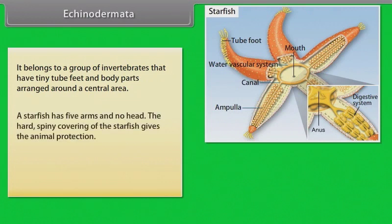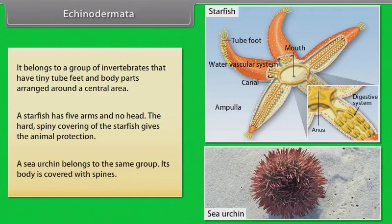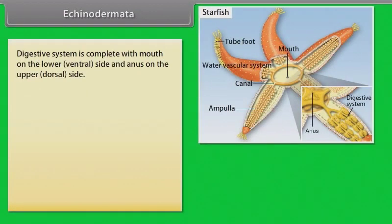A starfish has five arms and no head. Its hard, spiny covering provides protection. A sea urchin belongs to the same group and its body is covered with spines. The digestive system is complete with the mouth on the lower ventral side and anus on the upper dorsal side.